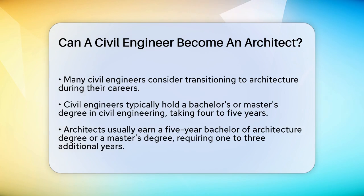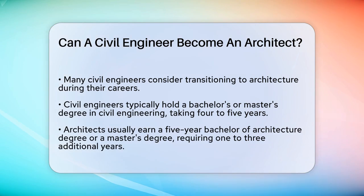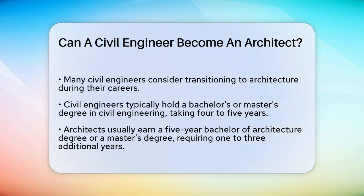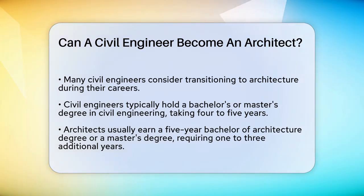First, let's look at the educational background required for each profession. Civil engineers typically hold a bachelor's or master's degree in civil engineering, which takes around four to five years to complete. Architects, on the other hand, usually earn a five-year bachelor of architecture degree or go on to get a master's degree, adding another one to three years.